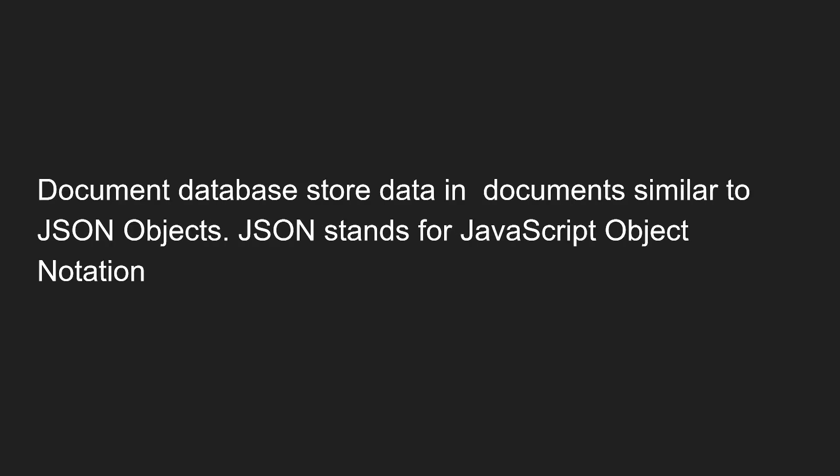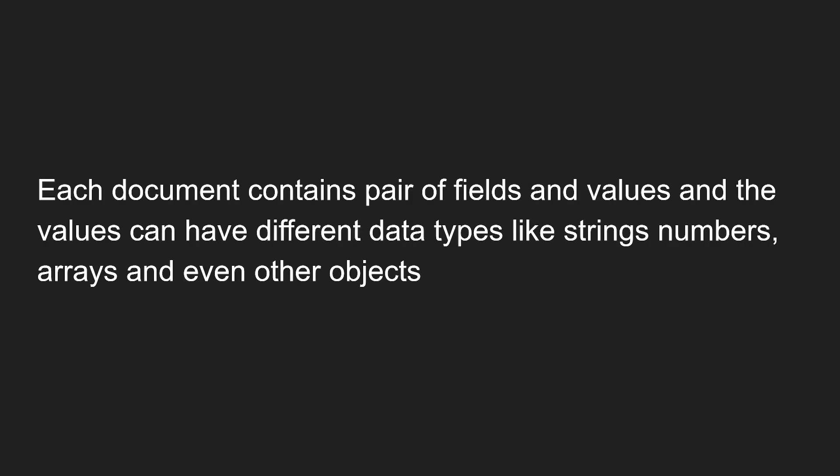Document databases store data in documents similar to JSON objects. JSON stands for JavaScript Object Notation. Each document contains a pair of fields and values, where the values can have different data types like strings, numbers, arrays, and even other objects — essentially key-value pairs where the value can be a string, number, array, or nested object.